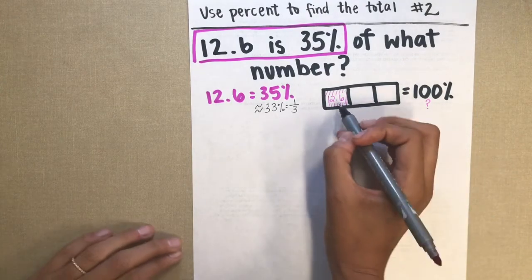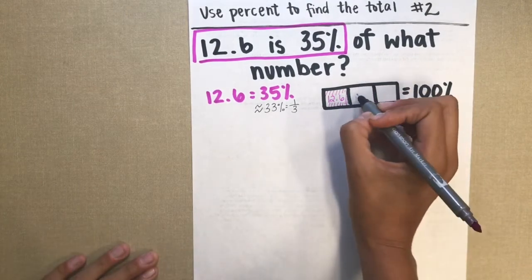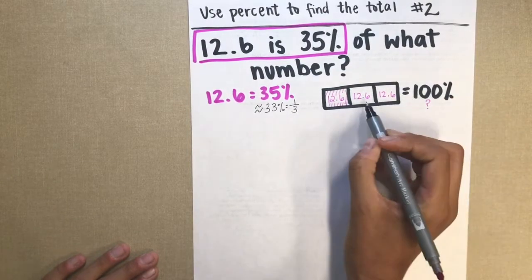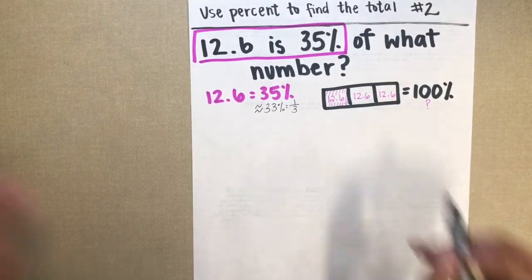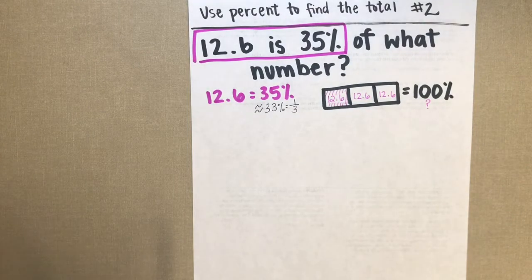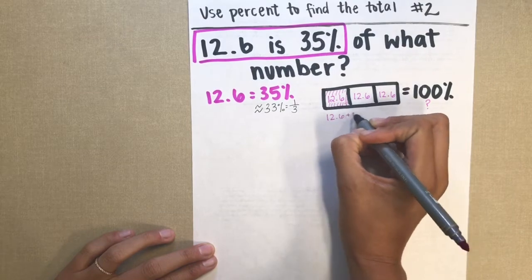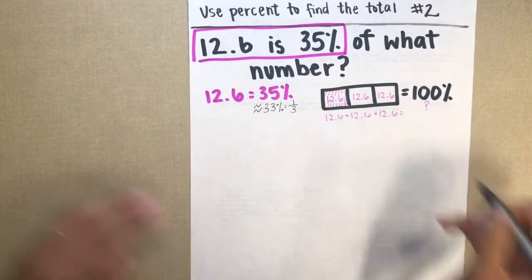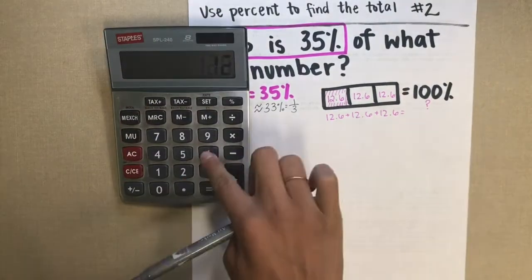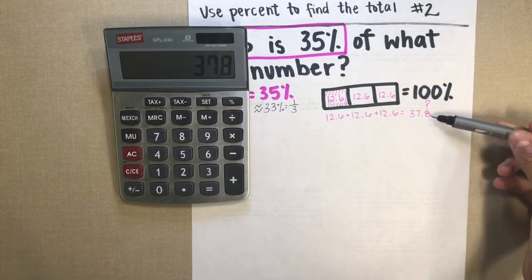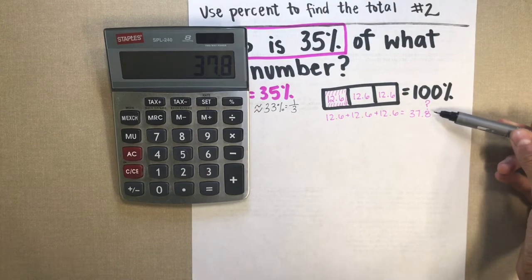You could say that 12.6 is about 1 third. Which means that these other thirds are each equal to 12.6. And I can add them up. So I know that my total amount is somewhere close to 37.8.